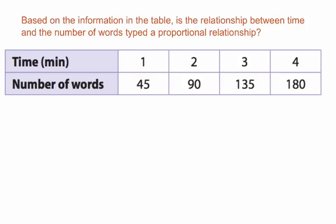Okay. So let's talk about this one. Let's look at this word problem. Based on the information in the table, is the relationship between time and the number of words typed a proportional relationship? So you'll see questions like these to see if the proportion is consistent. So all you want to do is look at your x and your y, and see if it's proportional. I know we start with a 1 to 45 unit rate.